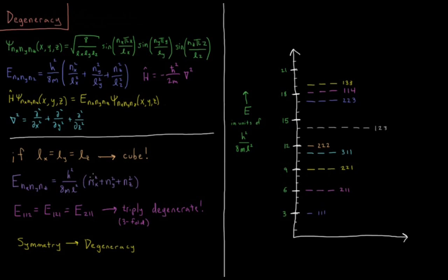2 squared plus 1 squared plus 1 squared is 4 plus 1 plus 1 is 6. So 2-1-1, 1-2-1, and 1-1-2 are triply degenerate at e equals 6 h squared over 8 mL squared.